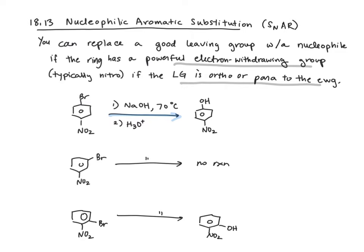This does not happen when we take the meta-substituted product, but when we get to the ortho-substituted product again, we can accomplish the replacement of bromine with a hydroxy group.